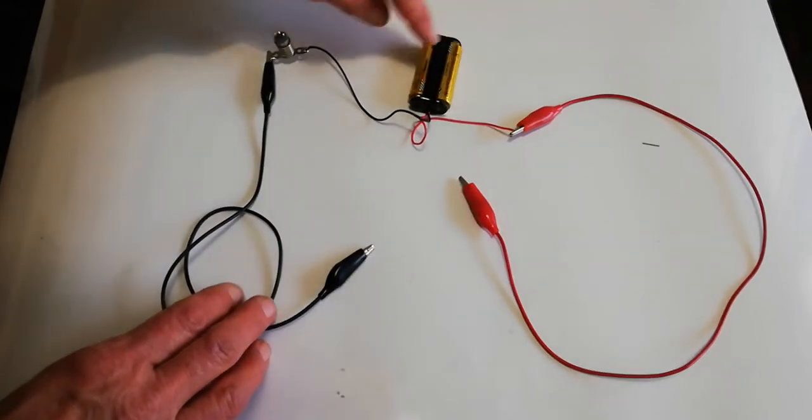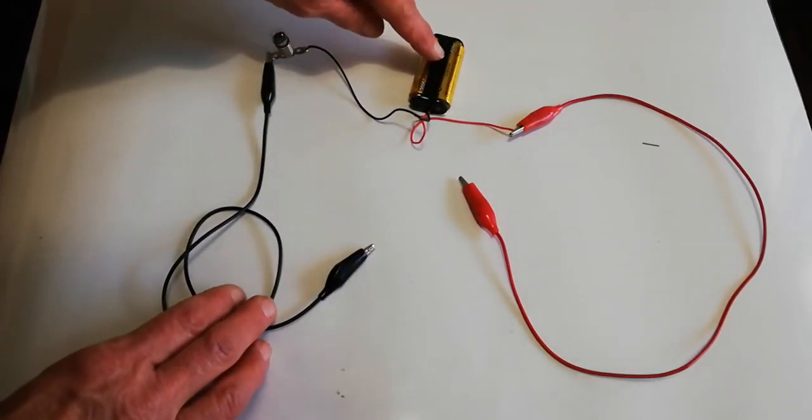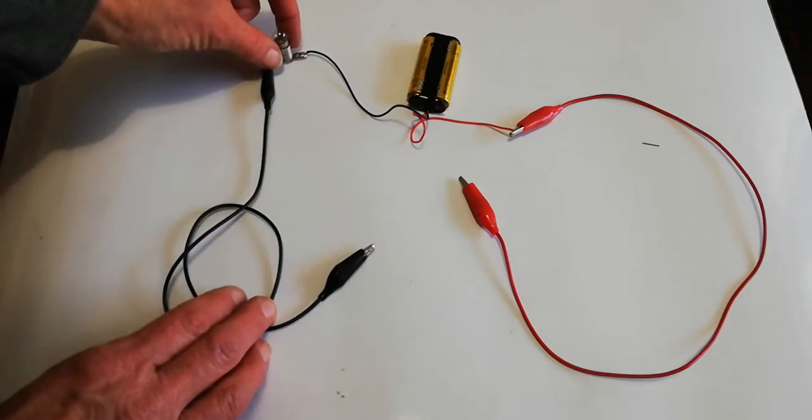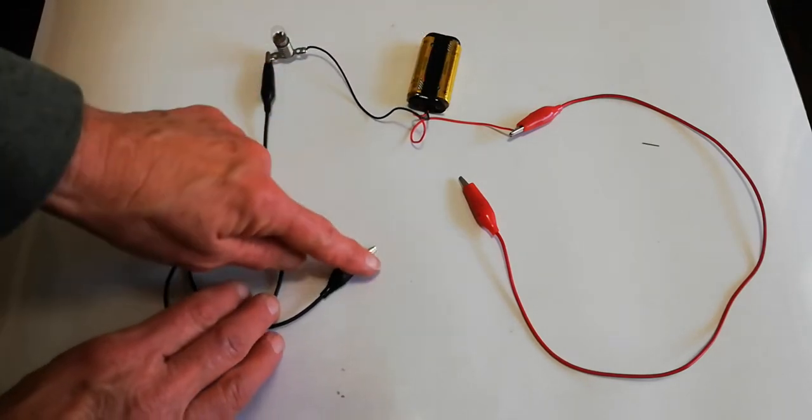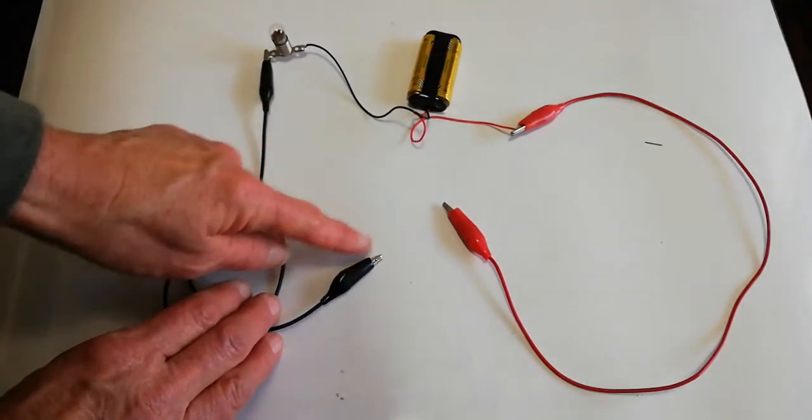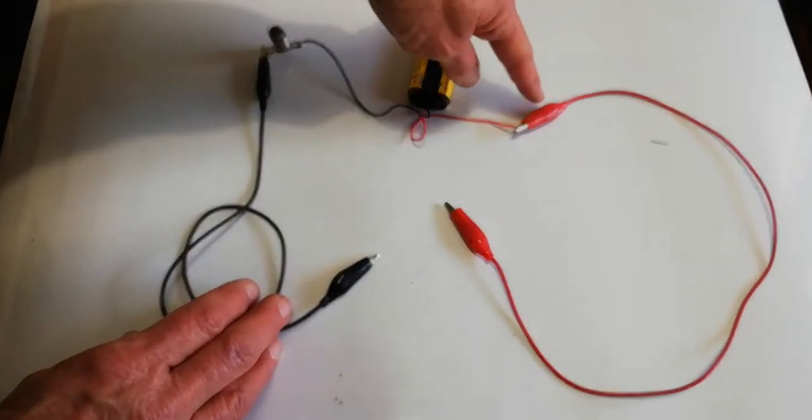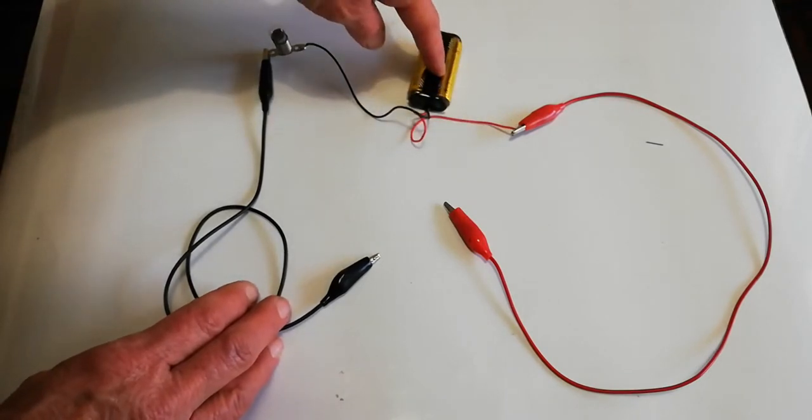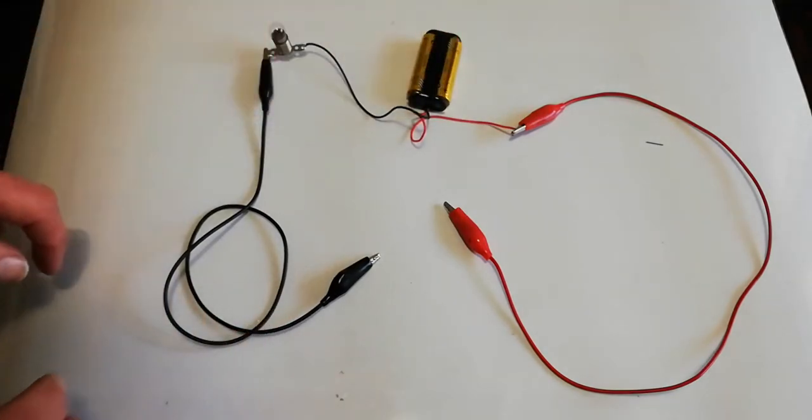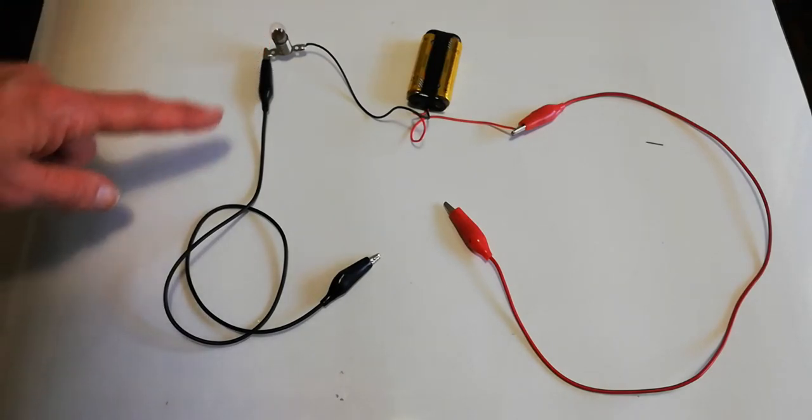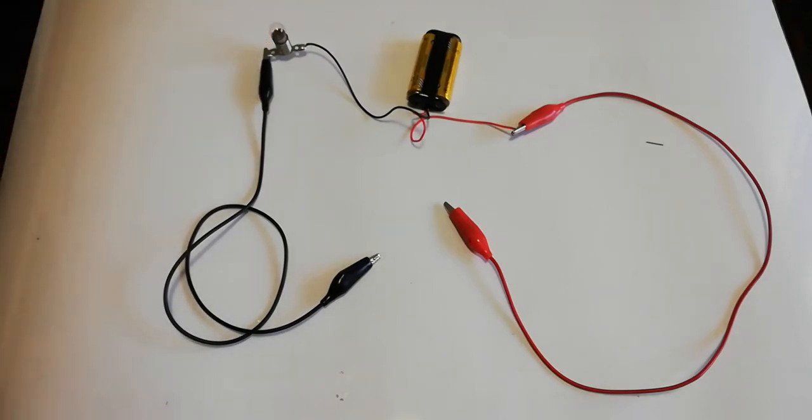In the circuit we have our power source, a 3 volt battery. It's going to go through a light, and then we're going to put the material in this gap, connect it, and then the electricity is going to continue back to the battery. If the material can conduct electricity the light will shine. If it is an insulator the light won't shine.